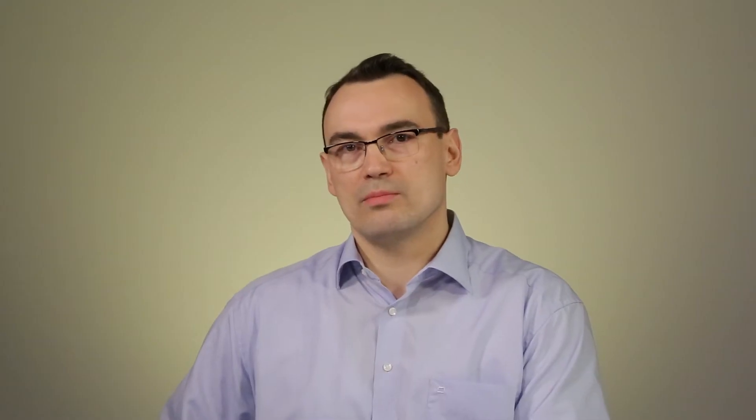The two-channel full ring applicator is mainly chosen due to its fixed geometry. It allows for quick insertion into the patient and allows for easy reconstruction in the treatment planning system.